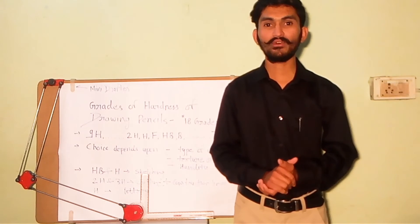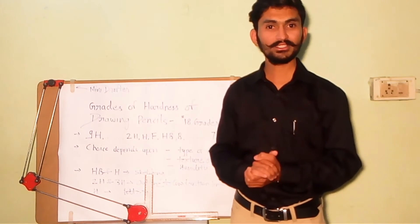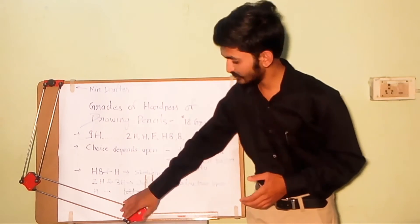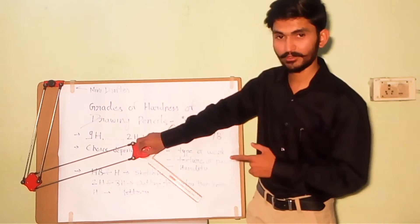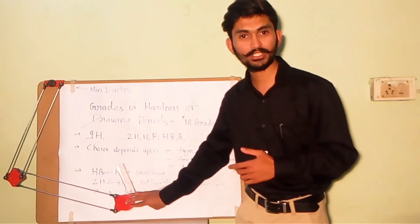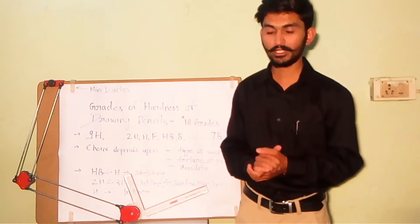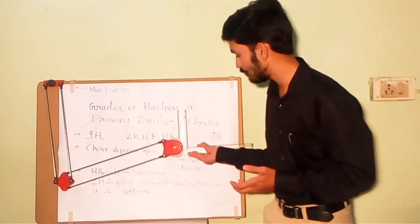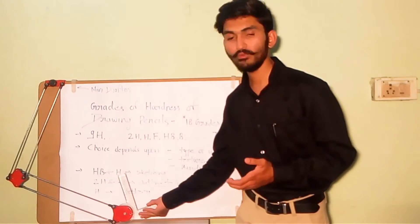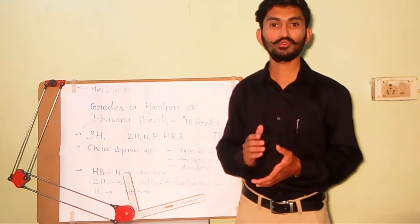So the first question is what is a mini drafter. This device is called a mini drafter. Nowadays, this device is used everywhere in industries where high quality performance and accuracy is required, because this device can move throughout the sheet very quickly and accurately, and it saves time up to 25 to 50 percent. That's why it is very important in engineering drawing.